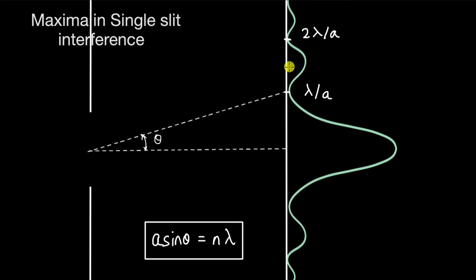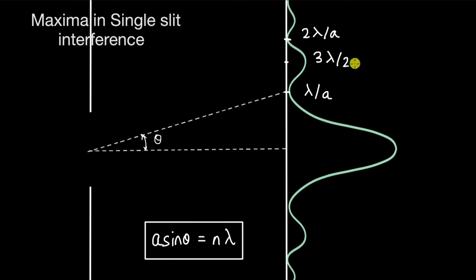We can see that there is one maxima between the first minima at λ/a and the second minima at 2λ/a. It is safe to assume that the angular position of this maxima could be 3λ/2a — that is, 1.5λ/a, halfway between the two minimas. Let's check if this is correct.